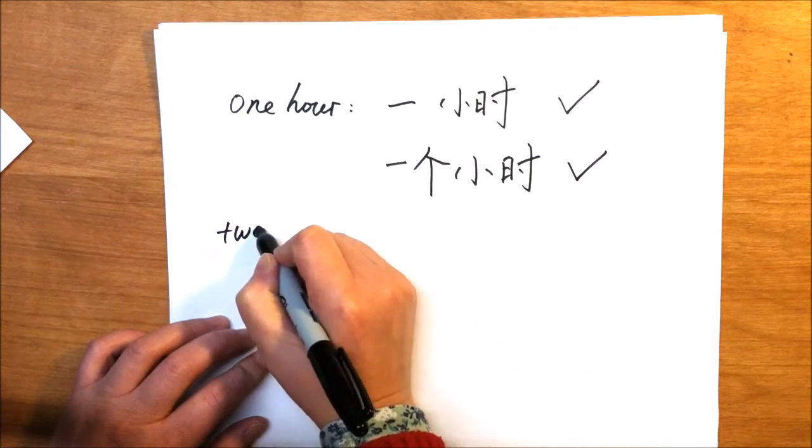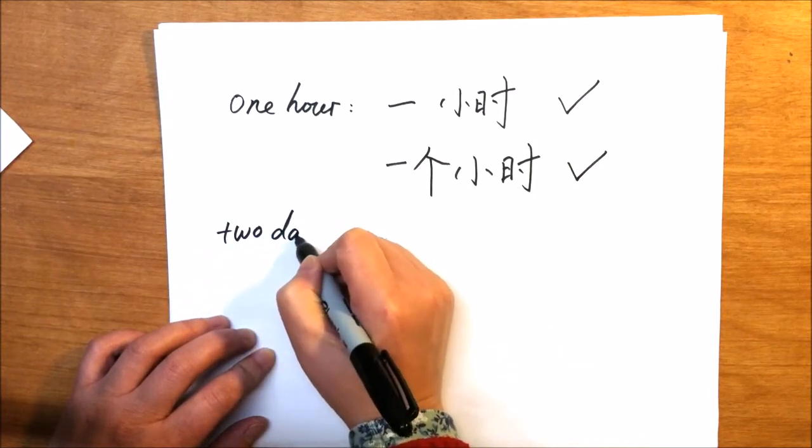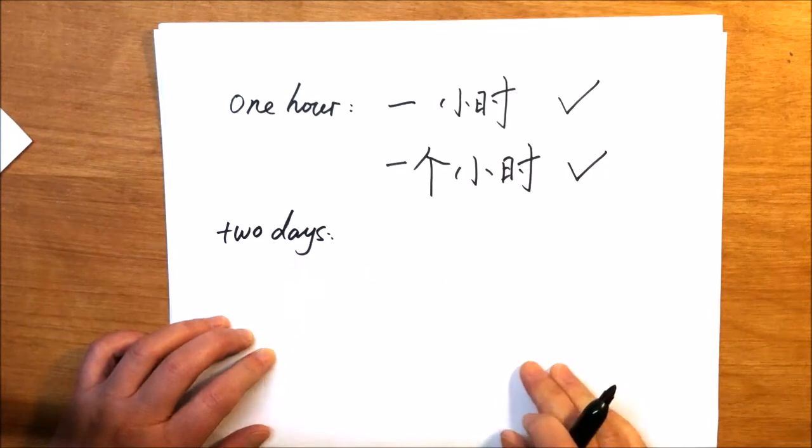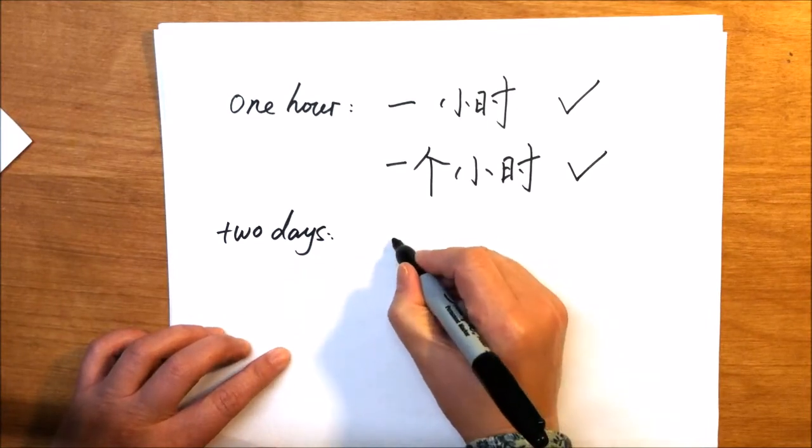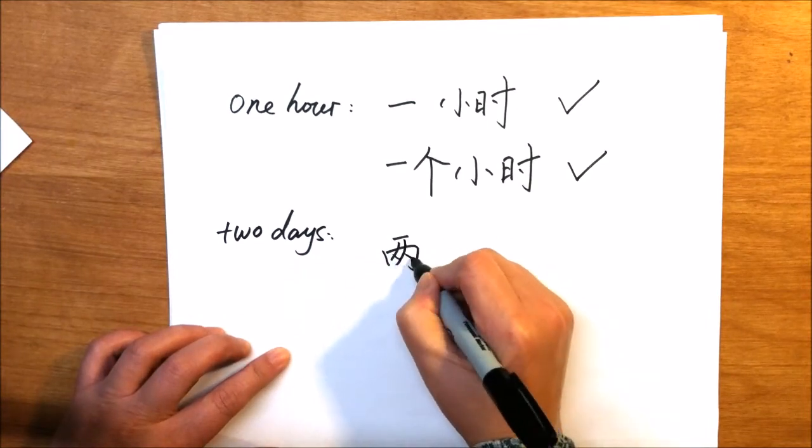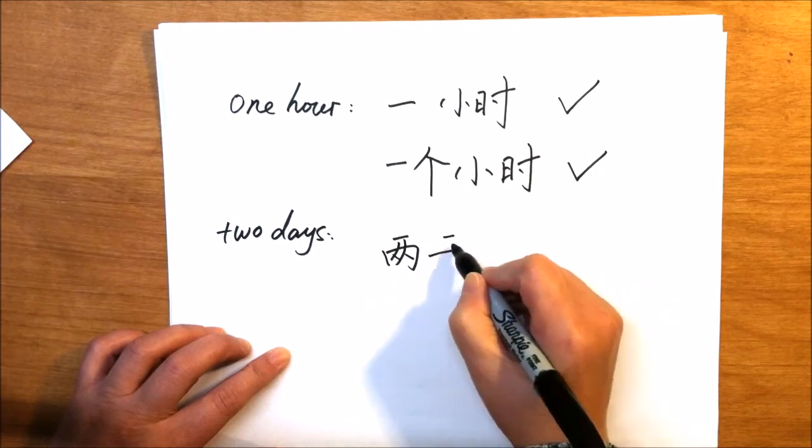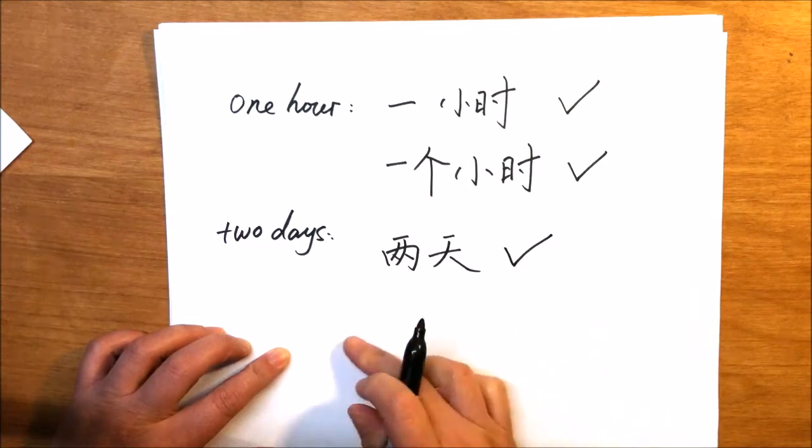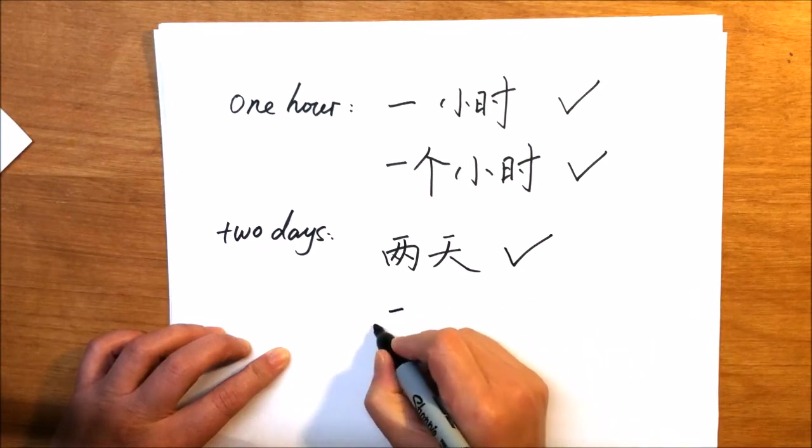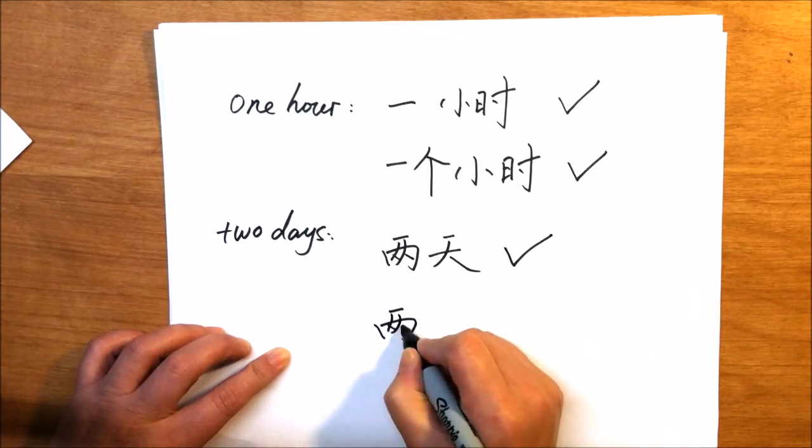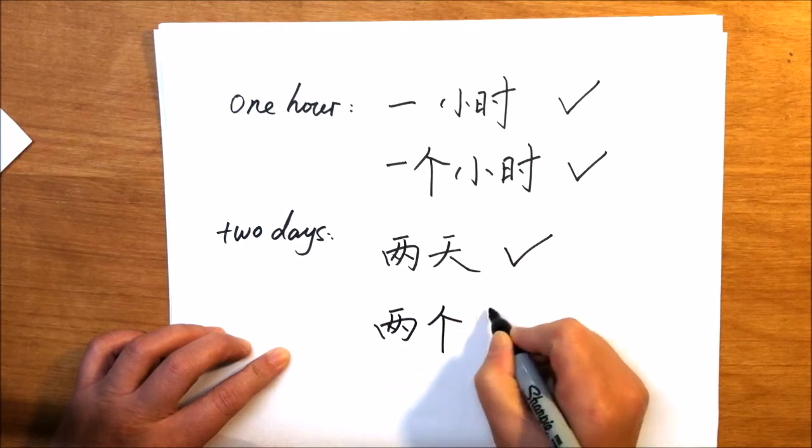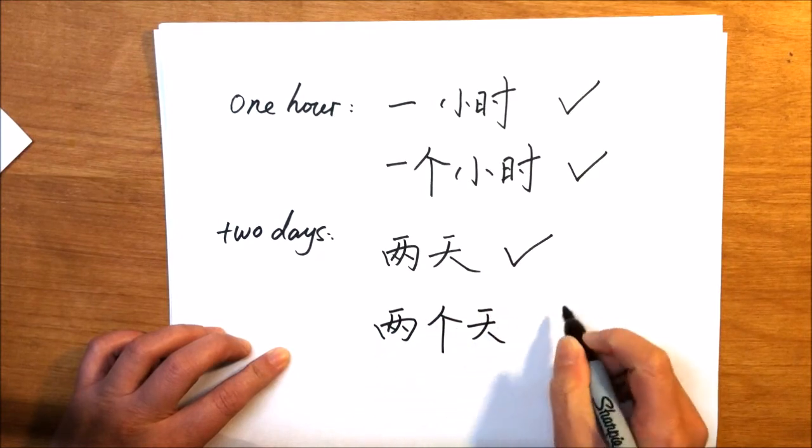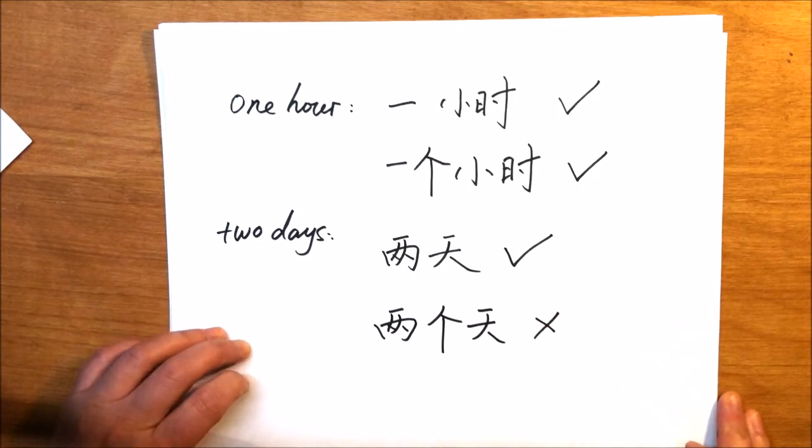How about two days? Two days, here we need 两天, that's correct. How about if we add the measure word 两个天? No, that's not correct.